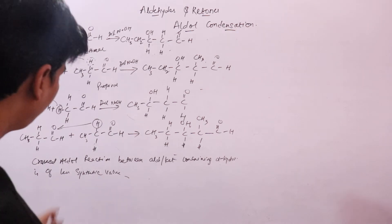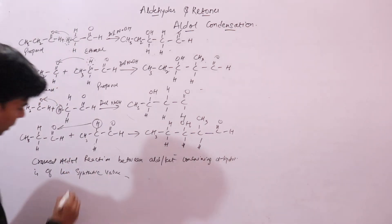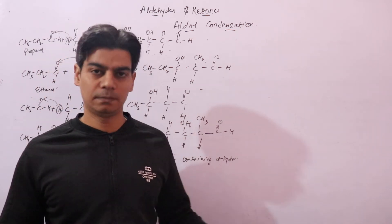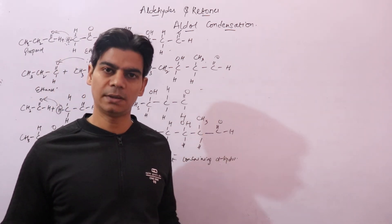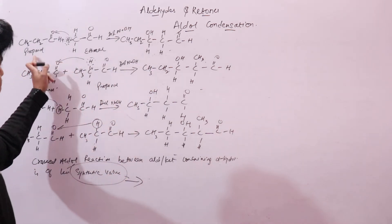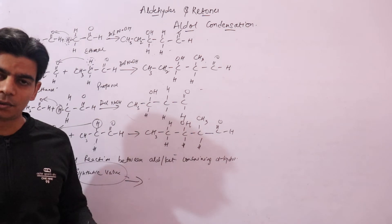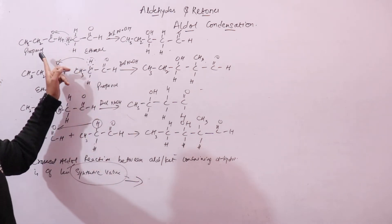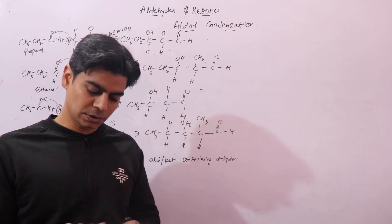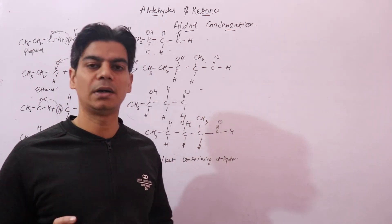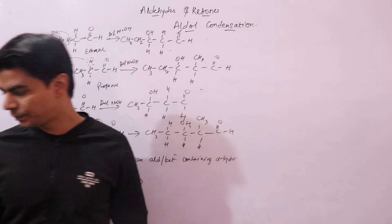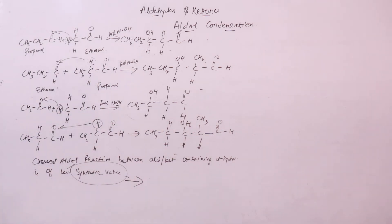Now we will discuss how to make this reaction better from a synthetic point of view. Synthetic value means from the point of view of making a specific product. If you use both aldehydes containing alpha hydrogen, you get a mixture of products. To make it a better reaction, instead of taking both aldehydes with alpha hydrogen, we take one aldehyde that does not contain alpha hydrogen and the other aldehyde that does contain alpha hydrogen. In that case you won't get this type of mixture — you get a single product.